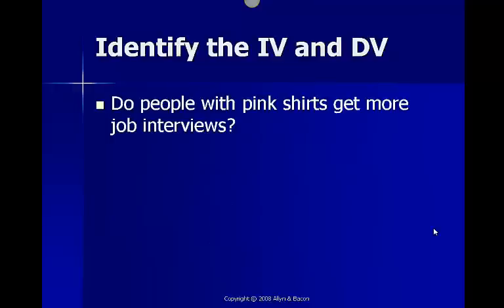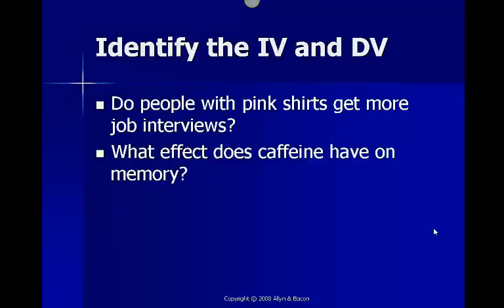Let's look at some examples. First, do people with pink shirts get more job interviews? Our independent variable would be the shirt color. Our dependent variable would be the number of interviews. What effect does caffeine have on memory? Our independent variable is caffeine. Our dependent variable would be memory.